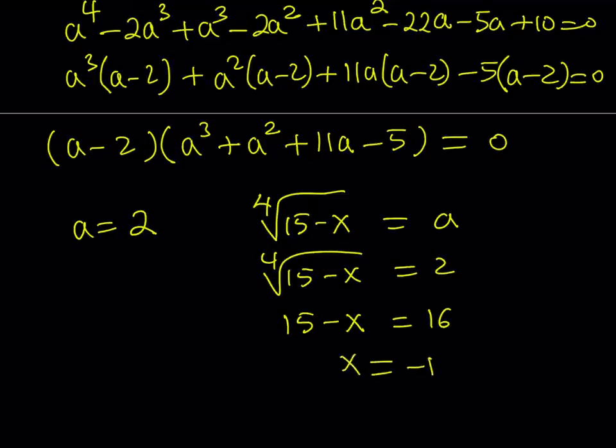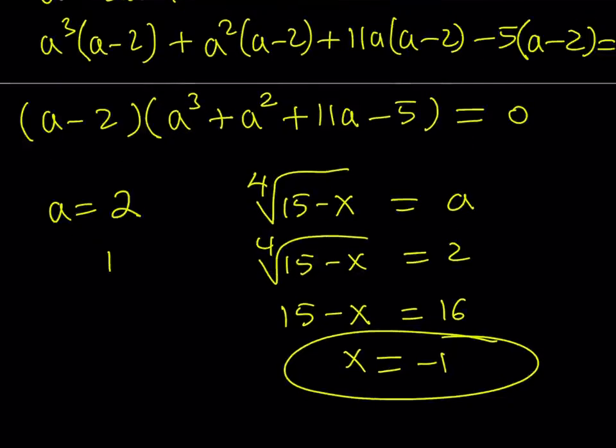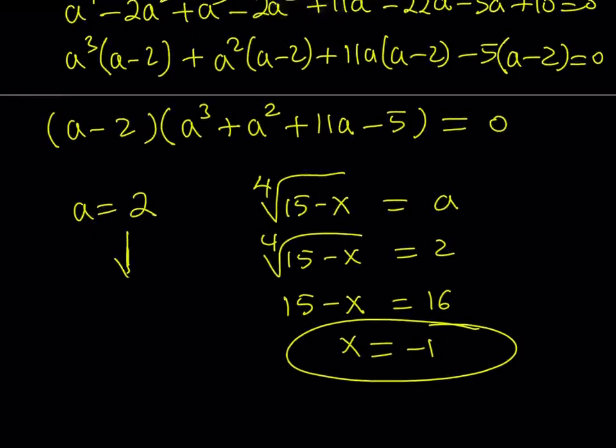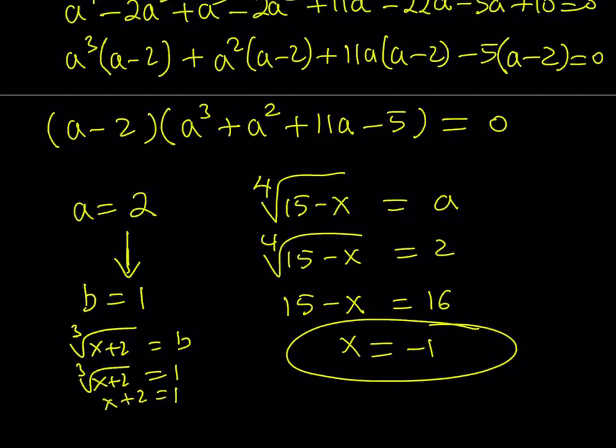If you raise both sides to the fourth power, you get 15 minus x equals 2 to the fourth power, which is 16. And from here, you get x equals negative 1. Now, what happens if you use b to solve for x? It doesn't really matter because we didn't really find b. But if you know that a is equal to 2, this implies that b is equal to 1 because their sum was 3. And if you set the cube root of x plus 2 equal to b, you would get cube root of x plus 2 equals 1. And from here, x plus 2 equals 1 and x equals negative 1 again. So you'll get the same answer no matter what.